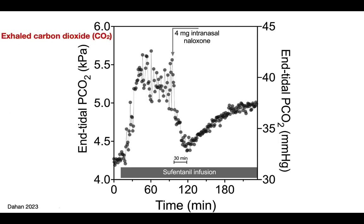This is an example we performed. We gave a volunteer an infusion of sufentanil — we see the increase in CO2. We give 4 milligrams of intranasal naloxone, and we see that the CO2 declines back almost to baseline, but it takes 30 minutes. But then I ask you: do we really need to go back to baseline with CO2? How much reversal is needed to sustain somebody's life? You can calculate that, because you need a certain oxygen flux to the tissues — to the heart, to the brain — in order to sustain life. And that's around 40% of baseline.